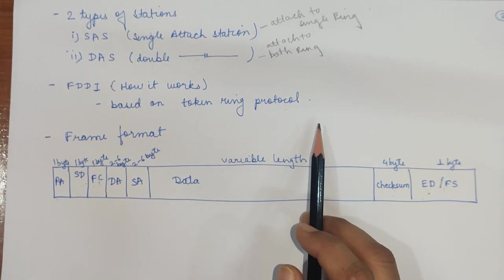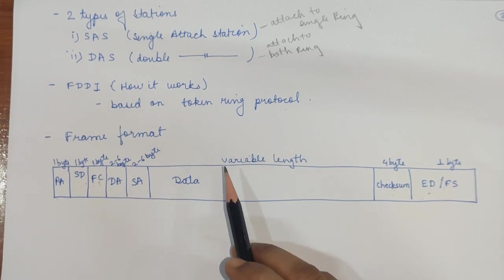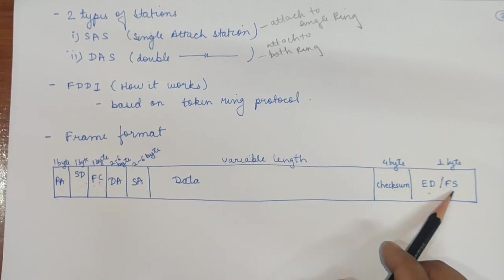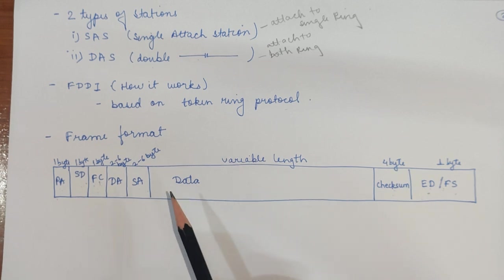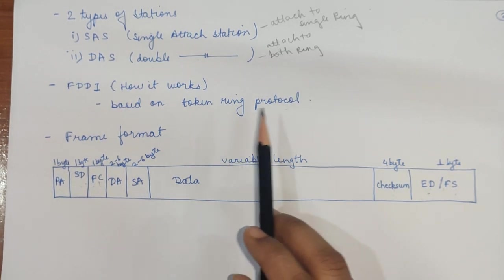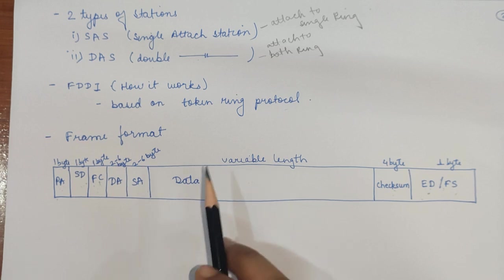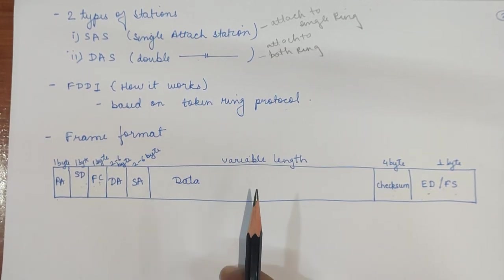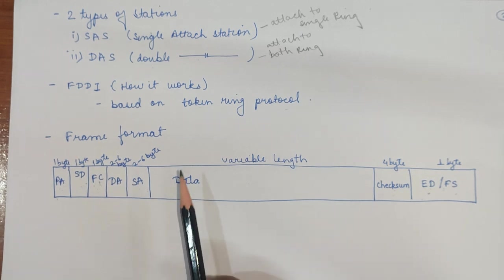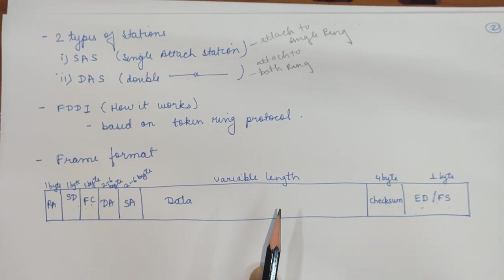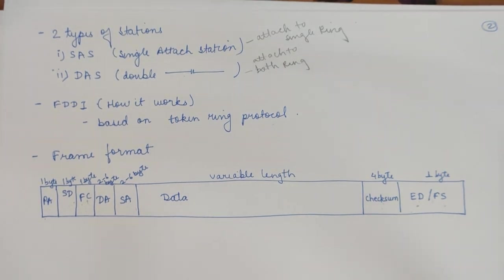The Frame Status field shows whether the receiver has copied the message. Once the destination copies the message, it sets the frame status accordingly. The empty token rotates back to the sender, who checks the frame status as an acknowledgement. The token continues rotating in the ring. This is how FDDI works. If you like the video, don't forget to like and subscribe.